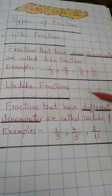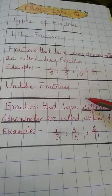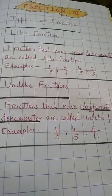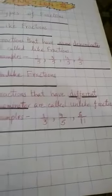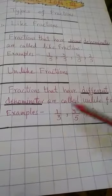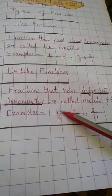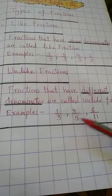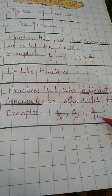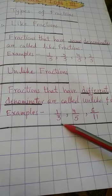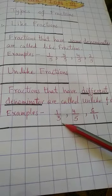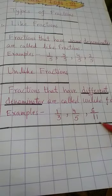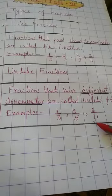The opposite of like fractions are unlike fractions. Fractions that have different denominators are called unlike fractions. Like 1 upon 3, 4 upon 5, 6 upon 11 — here the denominators are 3, 5, and 11, which are all different. That's why they are unlike fractions.